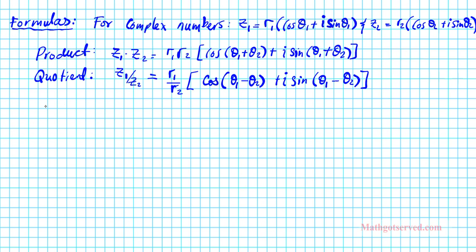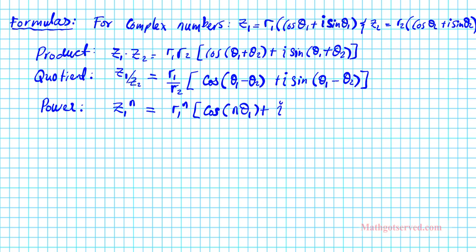We also have a formula for the power. Power is due to repeated multiplication. So if we have z1 to the nth power, you're going to have r1 raised to the nth power times cosine(n·theta1) plus i sine(n·theta1). When you multiply z1 by itself n times, you add theta1 to itself n times — repeated addition is multiplication — giving n·theta1 for both the cosine and sine arguments.